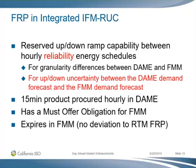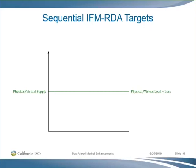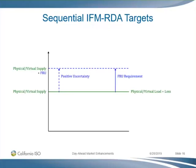Welcome back. Let's see the targets for those two options. For the sequential FMRDA, we have the power balance constraint to make sure that physical and virtual supply balances physical and virtual load and losses. We measure positive uncertainty from where the physical and virtual supply clears, and that sets up the flexible ramp-up requirements. Downward uncertainty from that point down sets the flexible ramp-down requirements.